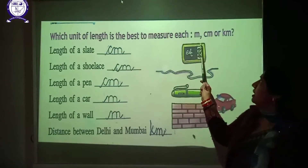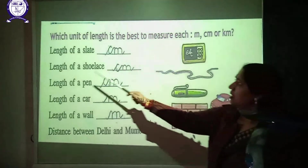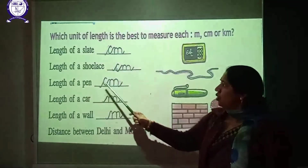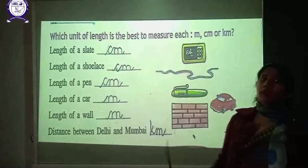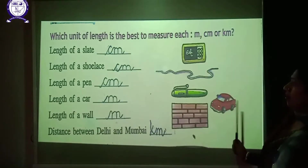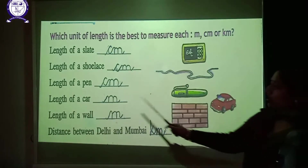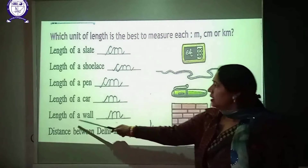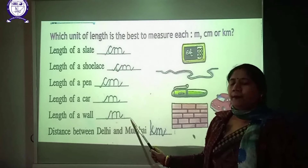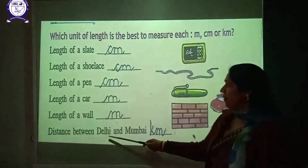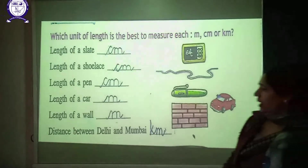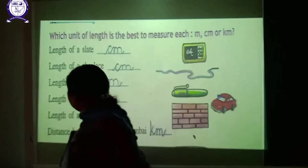Which unit of length — meter, centimeter, or kilometer — is best for each? The length of a scale, shoelace, and pen are measured in centimeters. The length of a car and a ball are measured in meters. The distance between Delhi and Mumbai is measured in kilometers.